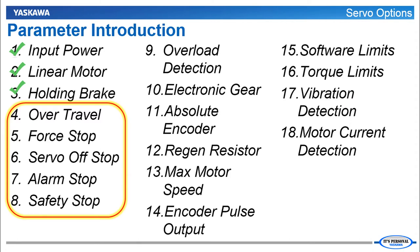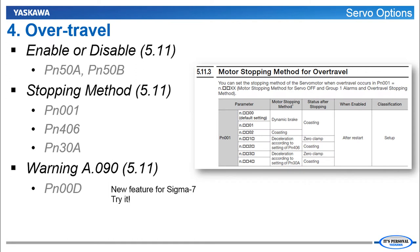Alright, 3 down and a bunch more to go. This next group of features all have to do with how the motor stops under different circumstances. First off is over travel. The sensors at the two ends of travel. These sensors can be enabled or disabled. You can change the stopping method.